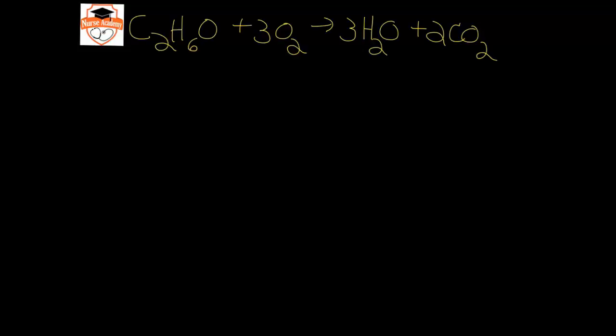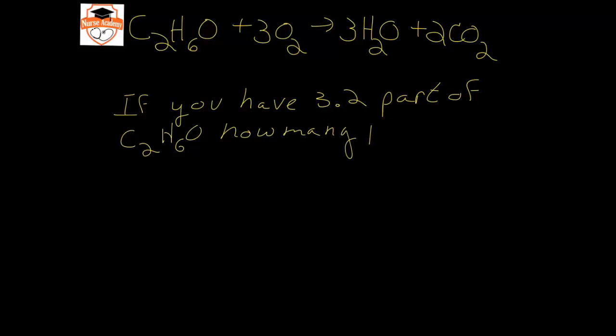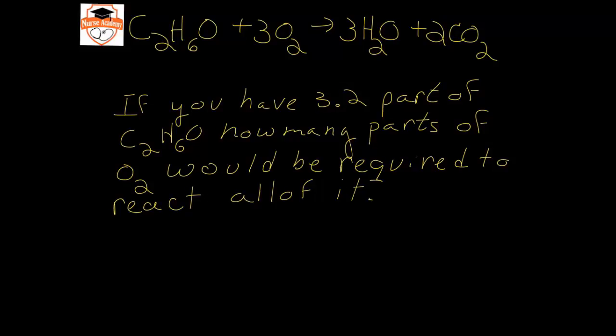In fact let's do one on the next. So let's say that we're going to do one with the combustion of ethanol. And now we're going to say if you have 3.2 parts or moles of C2H6O how many parts or moles of O2 would be required to react all of it? So this is a recipe and here I'm just saying well if I have this much of one ingredient to use it all how much of the second ingredient do I need? If you're trying to make brownies and you have a brownie recipe...